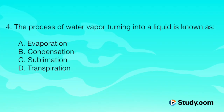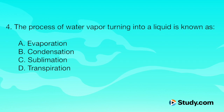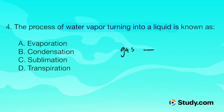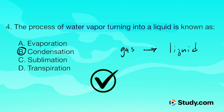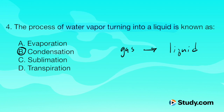Question 4. The process of water vapor turning into a liquid is known as: A, evaporation; B, condensation; C, sublimation; or D, transpiration. We want to go from water vapor — a gas — into a liquid. The correct answer is B, condensation. This is literally how we get rain. The water vapor in the atmosphere gets collected up into the clouds, and when it cools down enough, it turns back into a liquid and rains down.